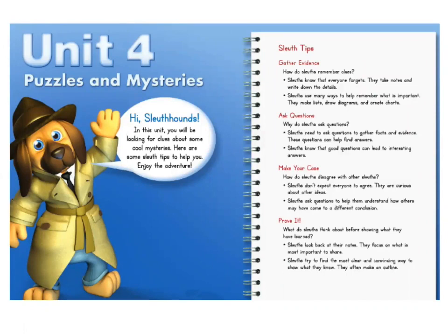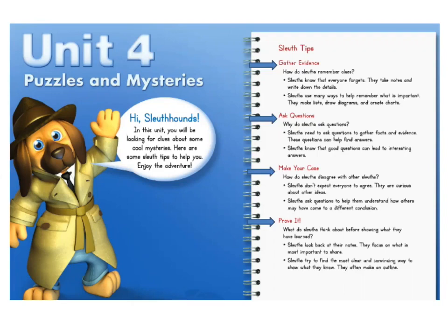Will you continue to help us by being the best sleuths around? Remember, to be a good sleuth, you need to gather evidence, ask questions, make your case, and prove it. We're going to be doing each of these things to help us answer the question: why do animals behave the way they do? We will read closely to gather specific text evidence, ask questions to dig deeper, support our claims using evidence from the text, and present our evidence and claims in a clear way.